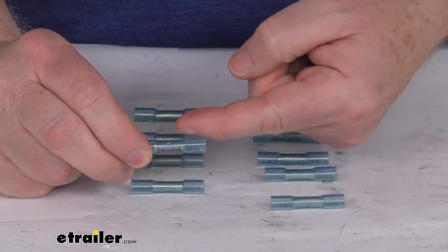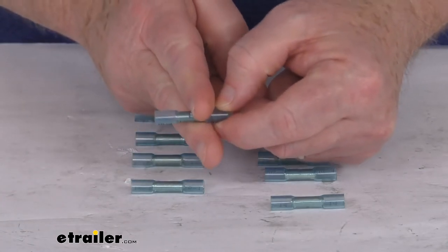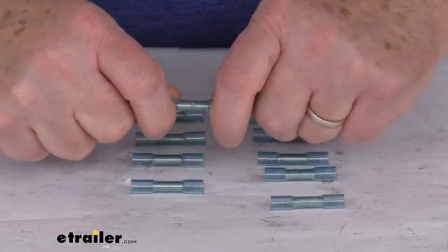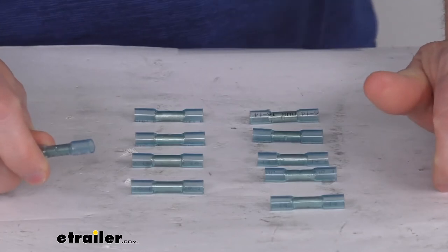Take the stripped end, push it all the way in so it'll go no further. Make sure it's under the metal casing. Take your crimper and crimp down on it. Once they're both crimped, grab each wire and just pull on both of them or tug on it slightly to make sure you have a nice good connection.